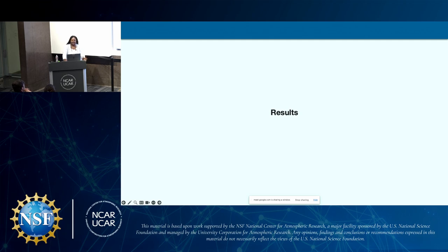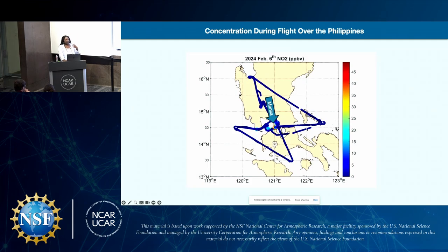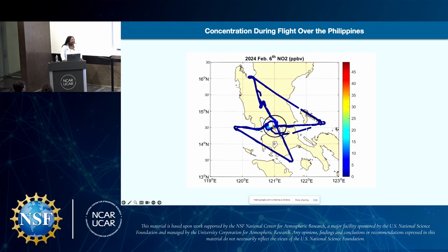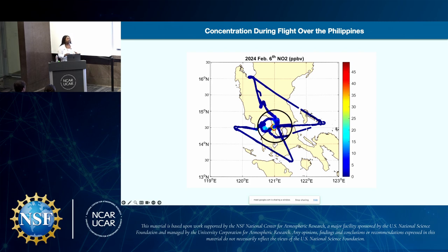Now that we've covered the instrumentation, we can move on to our results. This is a flight path over the Philippines on February 6th, 2024, showing a specific look at NO2. As you can see from the gradient, NO2 is very minimal over most of the region. However, when we look at the region labeled Manila, we see something different — a lot of variety of color and activity — because Manila is a highly urbanized and industrialized city within the Philippines. Manila is the capital of the Philippines and is also surrounded by power plants and other industrial factories. The rest of the Philippines isn't as industrialized, so you're not going to see as much emissions.